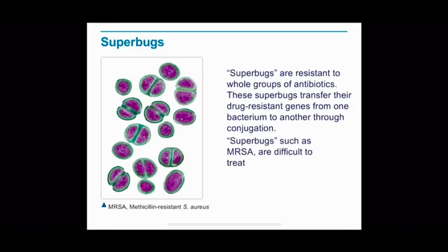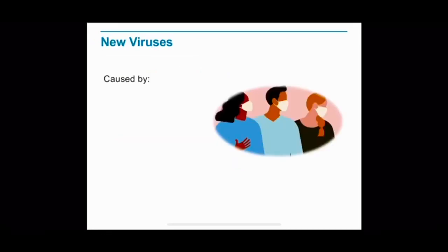An especially dangerous form of multiple drug resistance has recently appeared in a common bacterium known as MRSA. It can cause infections that are especially difficult to control. MRSA skin infections can be spread by close contact, including the sharing of personal items such as towels and athletic gear, and can often spread in hospitals where MRSA bacteria can infect surgical wounds and spread from one patient to another. Because bacteria replicate so quickly, their genetic makeup can change rapidly, sometimes allowing a virus to jump from one host species to another, causing new viruses.